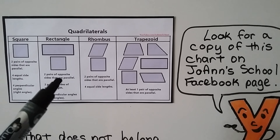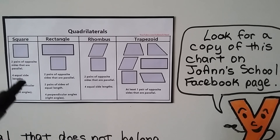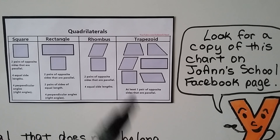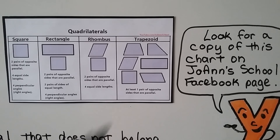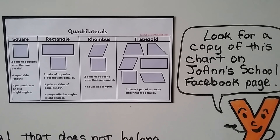I made a chart of quadrilaterals for square, rectangle, rhombus, and trapezoid, showing the properties that make each type. You can find a copy of this chart on Joanne's School Facebook page, where you can take a screenshot or copy, paste, and print it for your use.